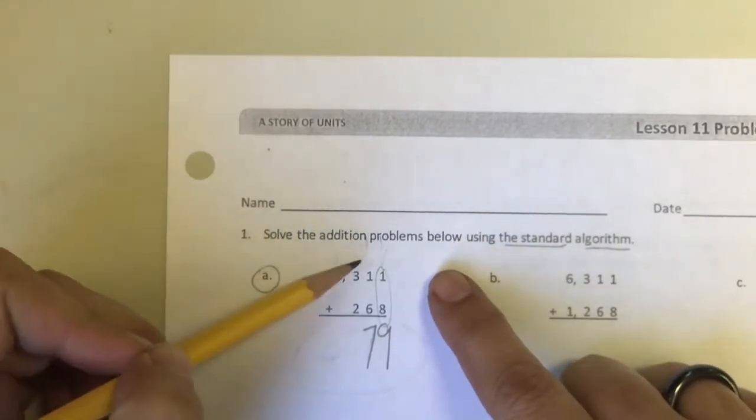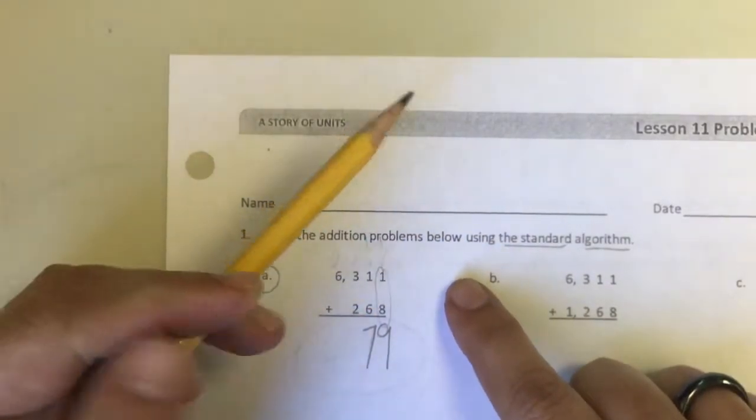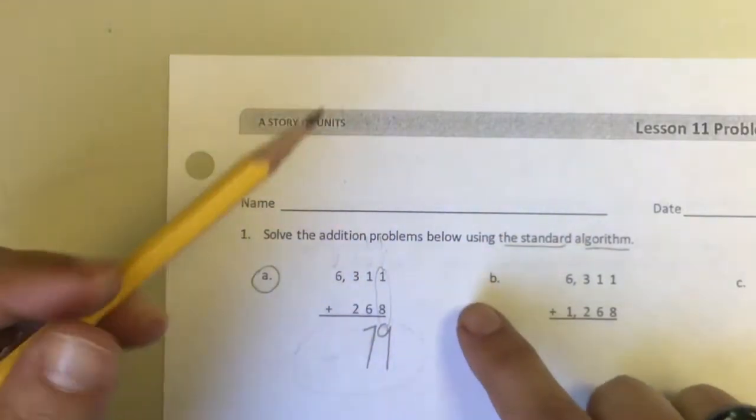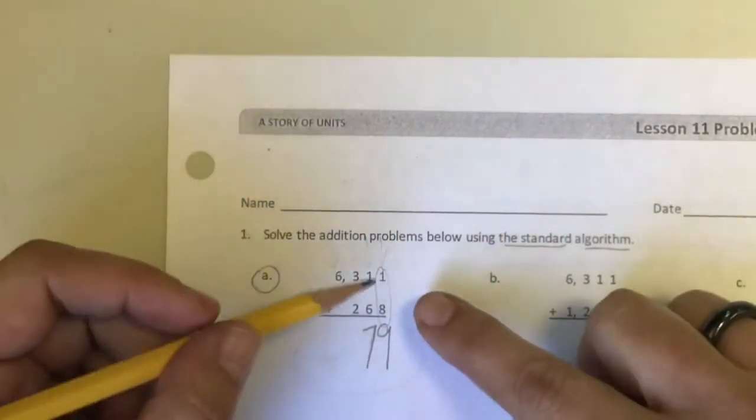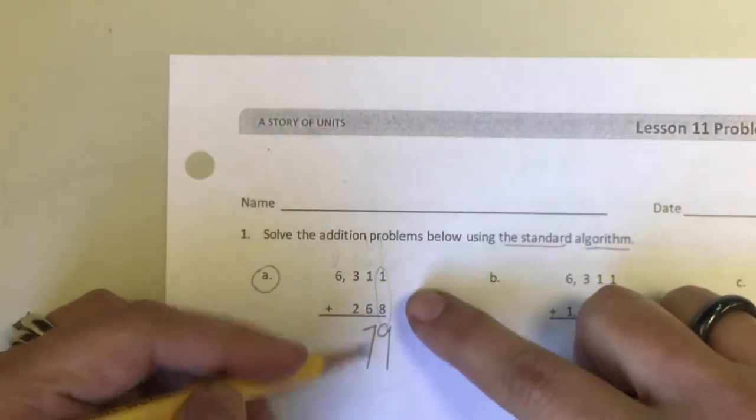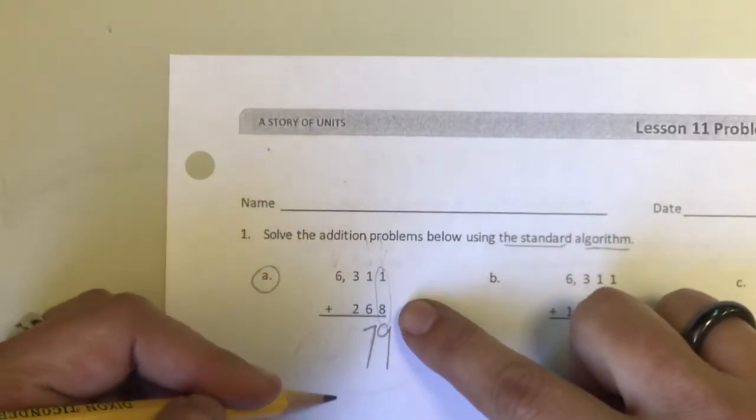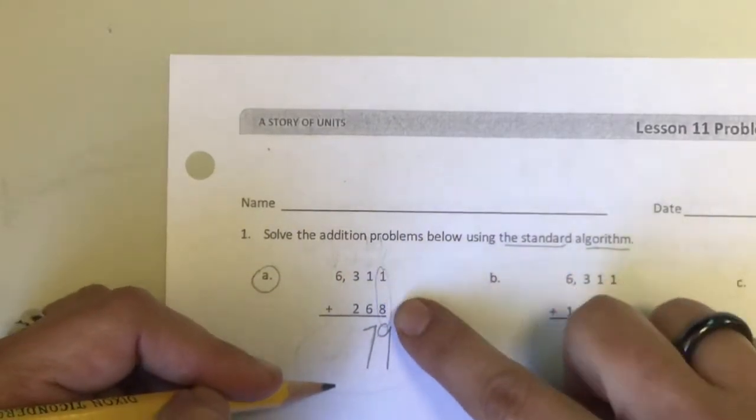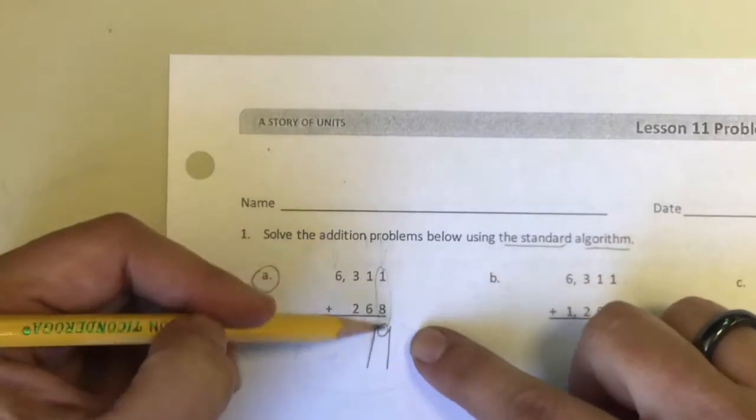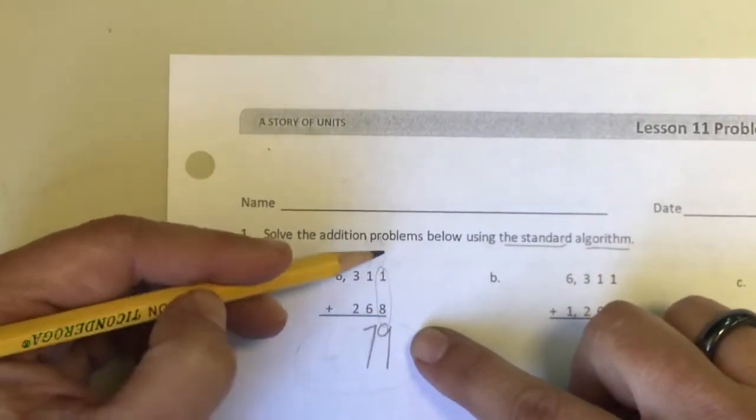Say solve the addition problems using the standard algorithm, and you can see that I have already started. So when I go to add stacked numbers I always want to start in the ones place and then make my way over one place to the left.